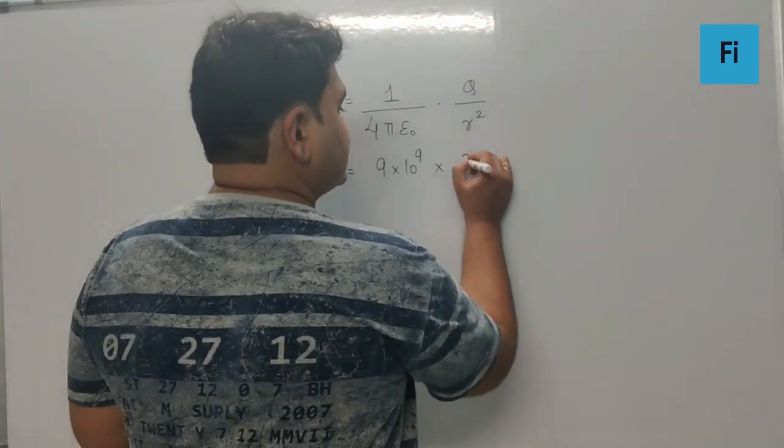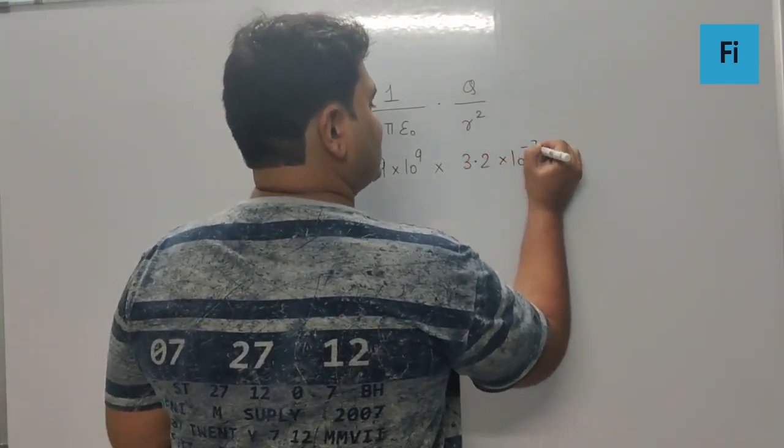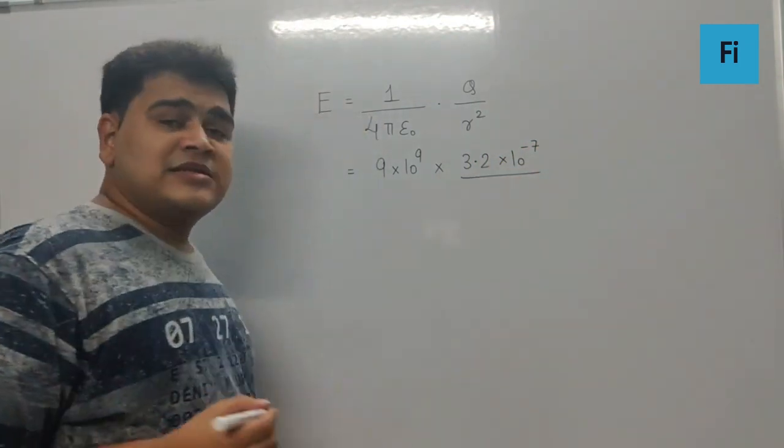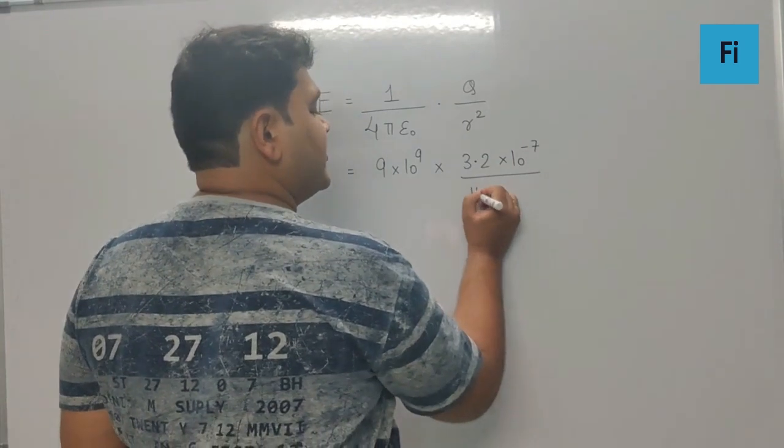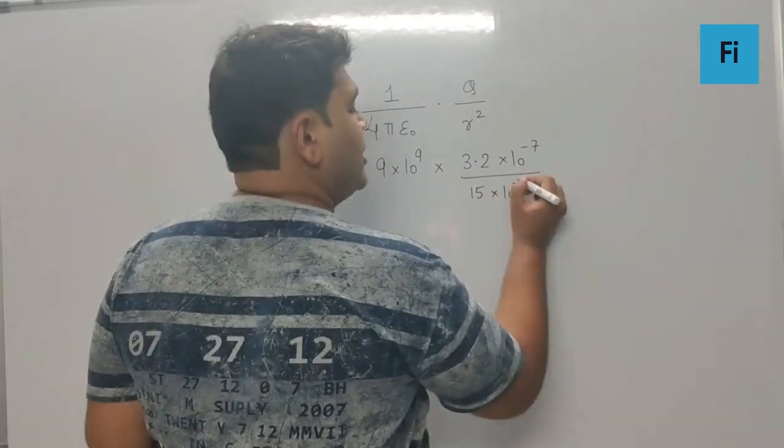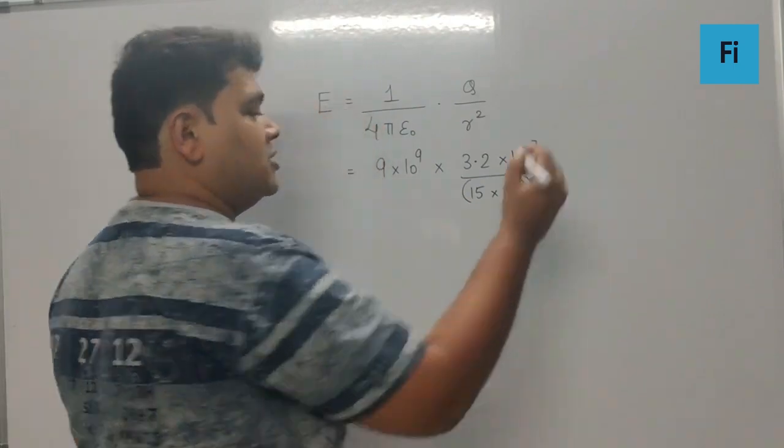And the distance as we know is 15 centimeter, so it is going to be 15 into 10 raised to minus 2 to convert that into meter, the whole square.